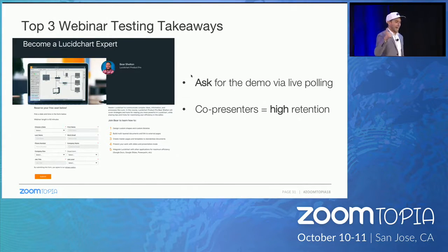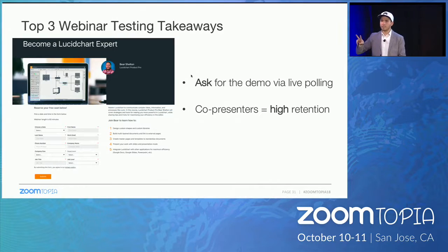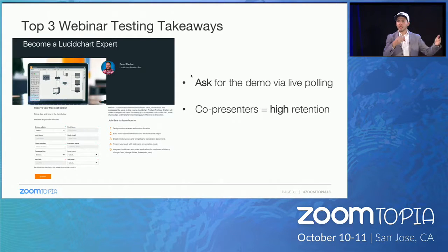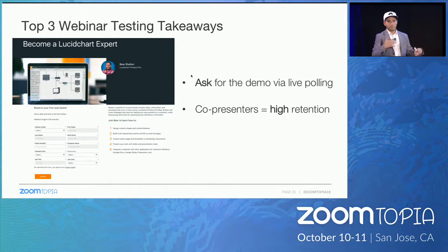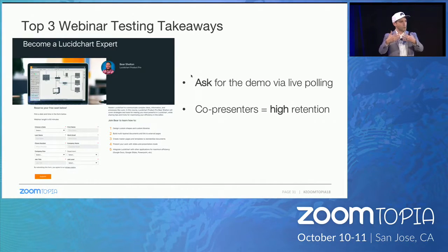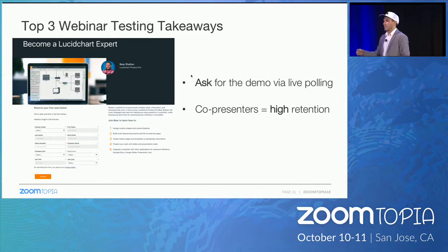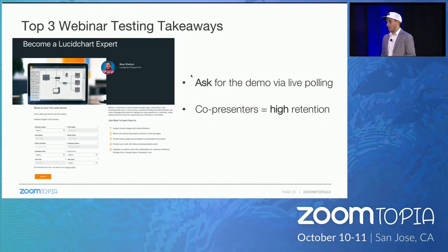Number two: if you want high engagement, high retention, and high attendance, have at least two presenters bouncing ideas back and forth. Put everything in the best category — audio, slides, screen sharing, and video — and have two presenters just talk about the subject for 30 minutes. Why does this work? You have two different genders, two different tones of voice, two different-looking people. People like diversity, and two video windows keep people awake and engaged.